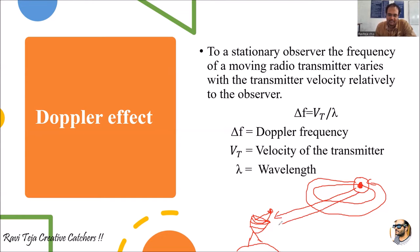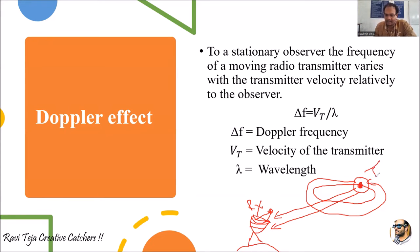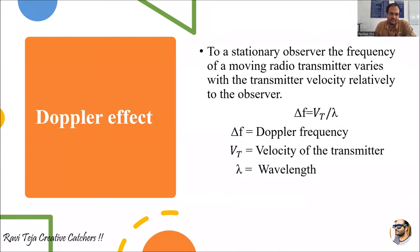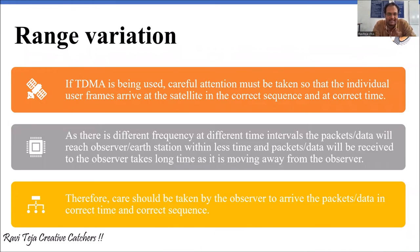Based on the velocity of that particular satellite, the frequency keeps on varying with respect to the earth station, where the earth station acts as the receiver or observer and the satellite acts as the transmitter. This is denoted by delta f equals vt divided by lambda, where delta f is the Doppler frequency, vt is the velocity of the transmitter, and lambda is the wavelength. Now let's see the second effect: range variation.